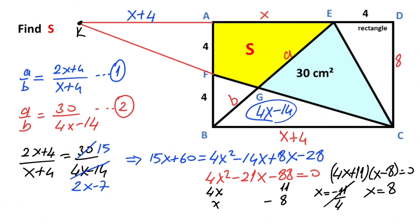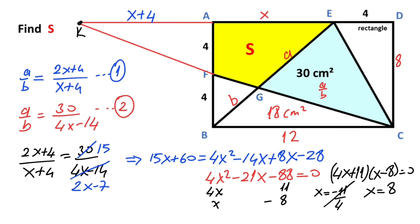Therefore this length here is 12, and this area is 18 centimeters squared. That means a over b must equal 30 over 18, so 5 over 3.